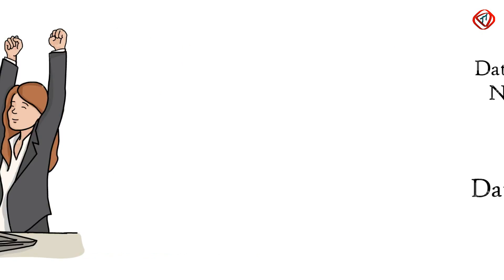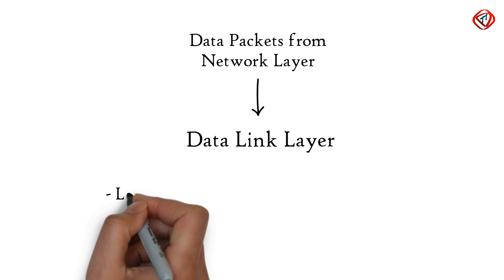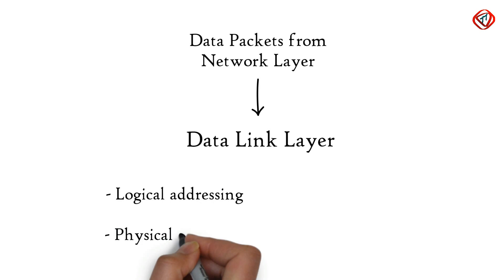Data link layer receives data packets from the network layer. Data packets contain IP addresses of sender and receiver. There are two kinds of addressing: logical addressing and physical addressing.